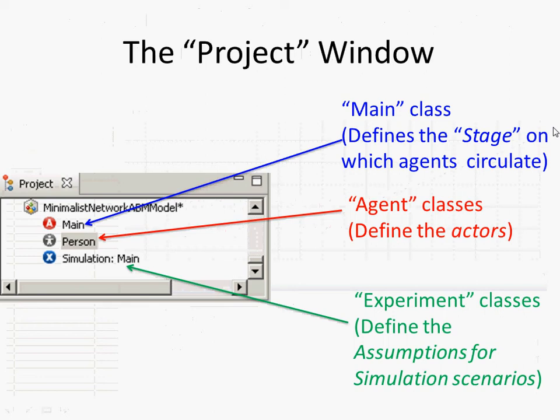The project window depicts a set of components for this model. The first is what is called the main class, and this class defines the stage under which agents are going to circulate. It could be one population of agents, it could be three populations of agents, or multiple populations of the same agent or different sets of agents. Basically, this is the environment that defines the global environment; it's also going to define the local environments, the patchwork in which agents move, or the place where a network is going to live.